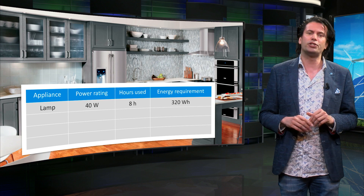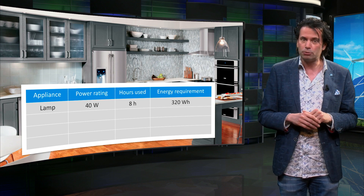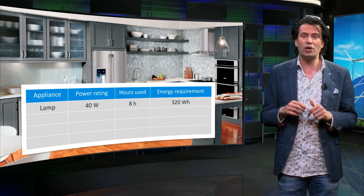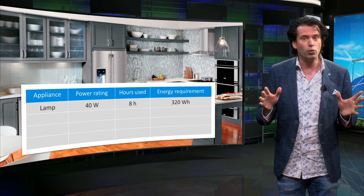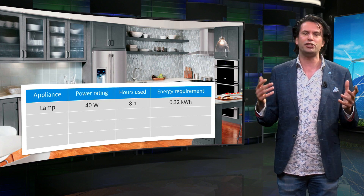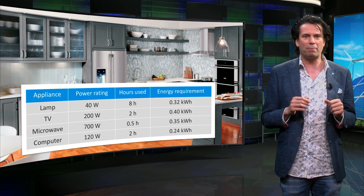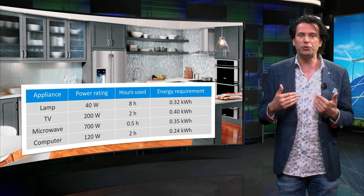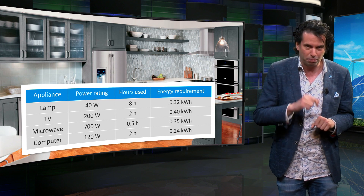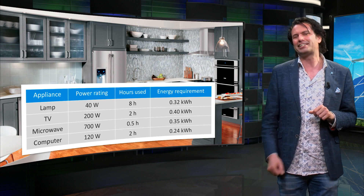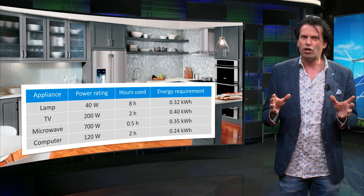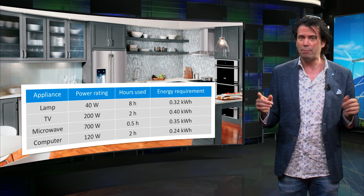The electrical appliances that we use in our homes usually have a label with a power rating. The amount of energy used by the appliances depends on the time for which it is used. A lamp rated at 40 watts, if used for 8 hours, will use 40 watts multiplied by 8 hours, which is equal to 320 watt hours or 0.32 kilowatt hours of energy. On your electricity bill, the electrical energy usage is expressed in kilowatt hours. You can easily calculate the energy used by other home appliances by looking at their power rating on the label and multiplying by the number of hours for which the appliance has been used. Can you estimate the amount of energy consumed on an average day in your house by filling up a similar table?